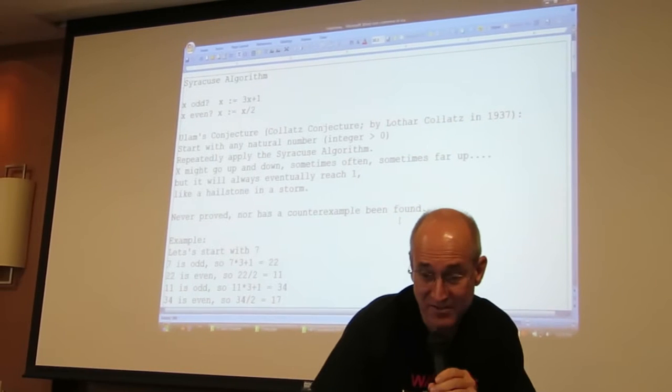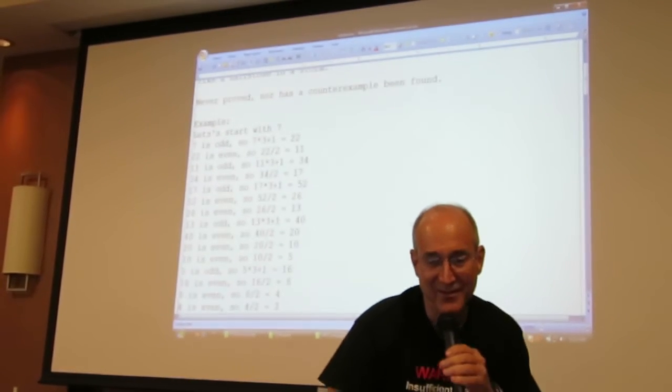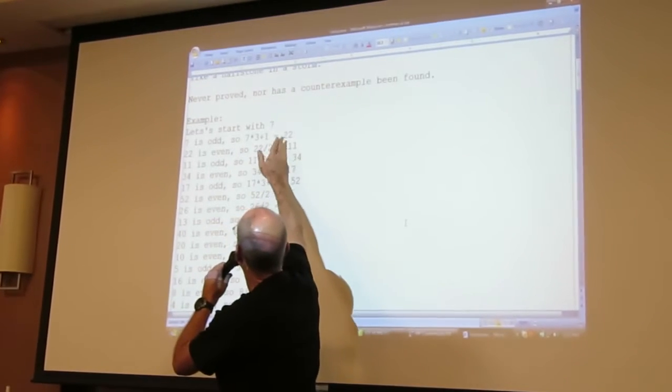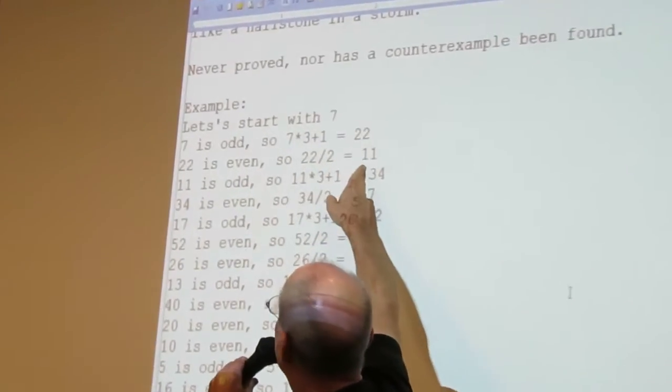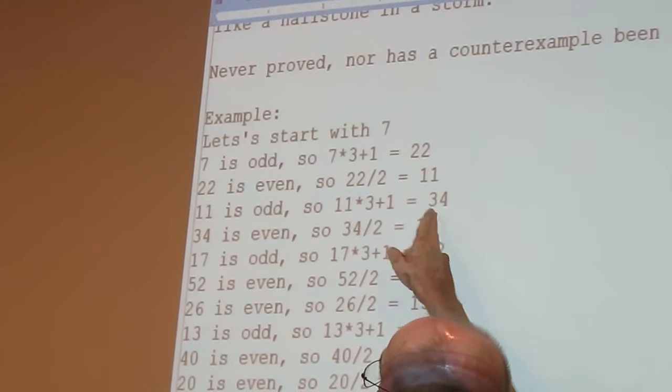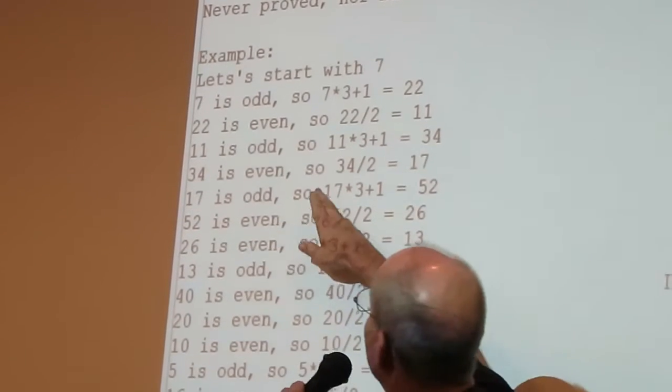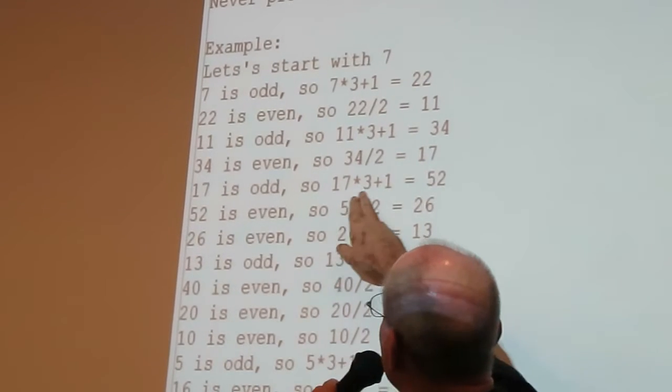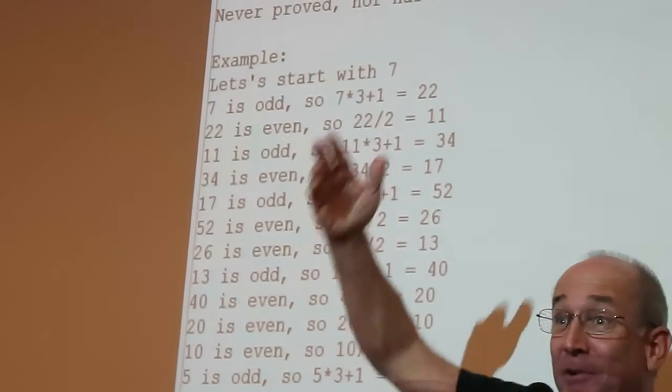Okay, so we have 7 here. Now this is going to scroll. There we go. Okay, so we start with 7. 7 is odd. So you multiply it by 3 and add 1. That gives you 22. But then you do it again. 22 is even. So you divide it by 2. That gives you 11. That's odd. So you multiply it by 3 and add 1. That gives you 34. That's even. Notice how it's like jumping up and down, back and forth, getting bigger, smaller.